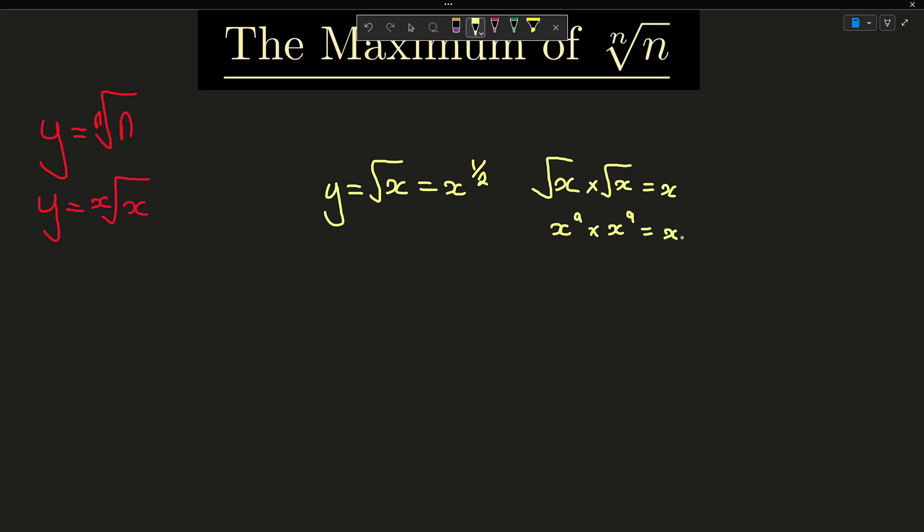And let's just say x to the a times by x to the a equals x. We know that using power rules that we add the powers, so 2a is essentially equal to 1, so a is equal to a half. And we can basically say that x to the half is equal to the square root of x, and this is true for the cube root of x. We can say that this is equal to x to the third. Following on from this, we can say that the xth root of x is equal to x to the 1 over x.